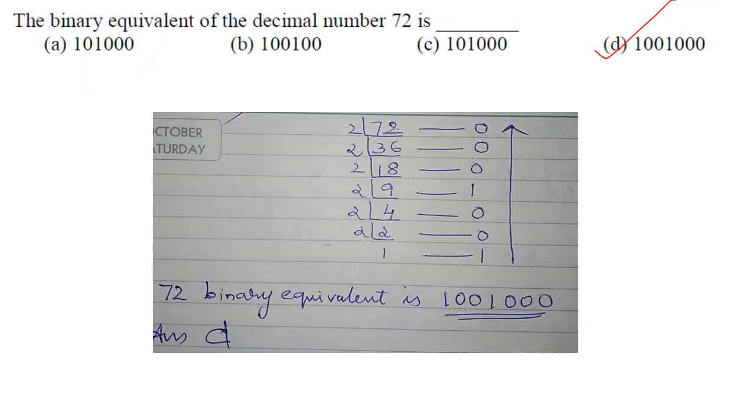The binary equivalent of decimal 72: divide 72 by 2 until you get remainder 1, then write the remainders (0 or 1) from bottom to top. So 1001000 is the binary equivalent of 72. Answer is option D.